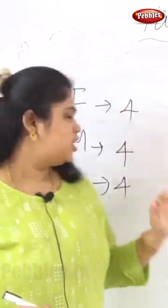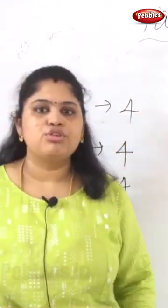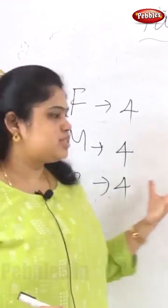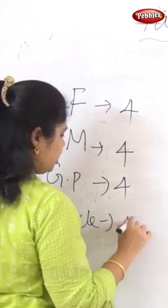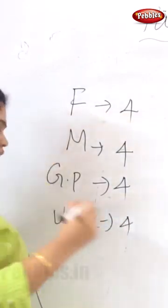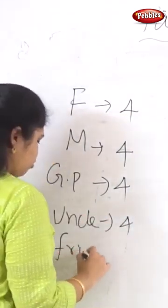So your father giving 4 chocolates, your mother giving again 4 chocolates, your grandparents giving another 4 chocolates. I am just including one more thing, your uncle also giving again 4 chocolates. And again your friends giving again 4 chocolates.